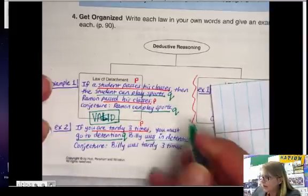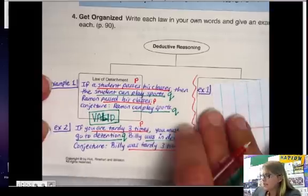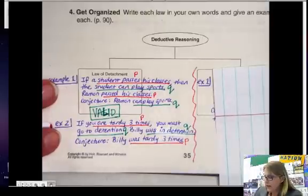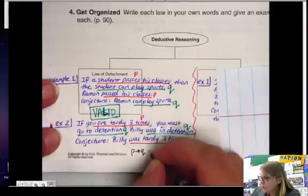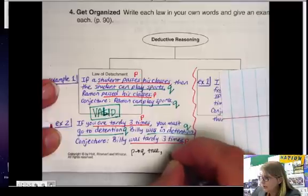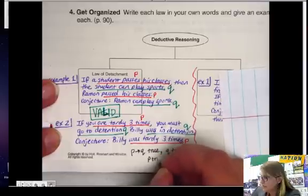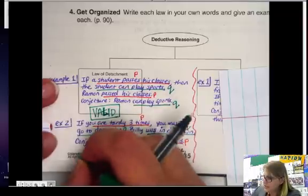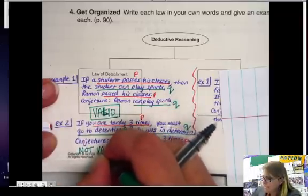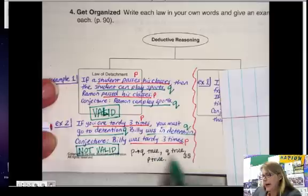Then we're told that Billy was in detention—we're back to Q again. And then he was, so he must have been tardy three times. So in this case, what's happening is we have P arrow Q is true, Q is true, therefore P must be true. And that is not a valid use of this law. This is not valid because you can't go backwards like that. It's not a valid use of the law of detachment.